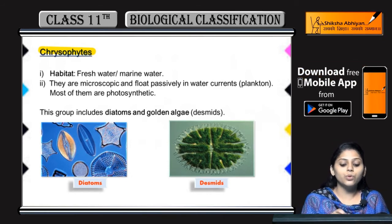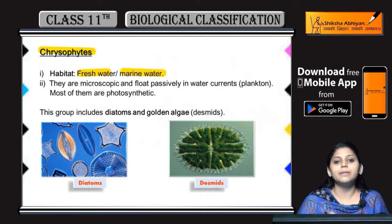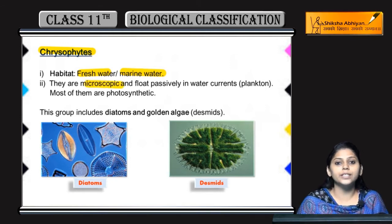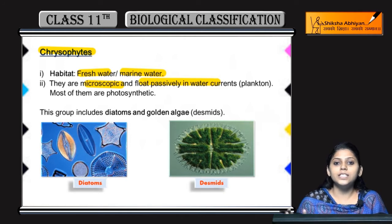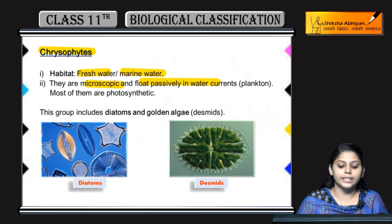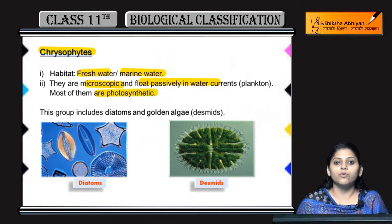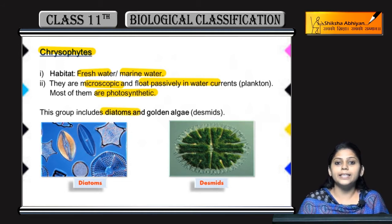Chrysophytes: they live in both fresh as well as marine water. Yhe microscopic hote hai, naked eyes se nahi dikhte. They float passively in water current — passively means without any energy, jis taraf paani beh raha hoga usi taraf yhe float karte hai. Most of them are photosynthetic in nature, woh apna khana khud produce karte hai. Iske examples hain diatoms and golden algae, jinhein desmids bhi bolte hai.